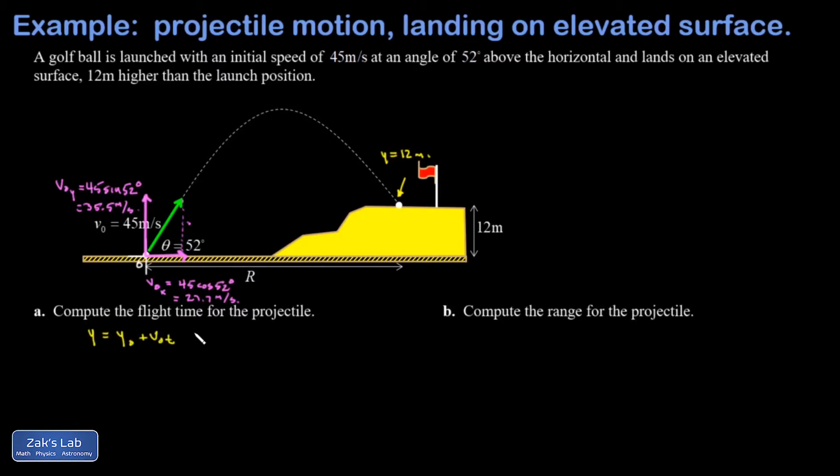Now remember the equations of motion for the vertical and horizontal directions can be unlinked and just written down separately. In the y direction there's an acceleration of negative g. In the x direction there's no acceleration at all. So I'm going to take my standard kinematics formula, but instead of plus one half at squared at the end, I'm going to plug in negative g for the acceleration. My final y position is 12, my initial was zero, my initial y velocity is 35.5, the flight time is unknown, plug in g equals 9.8.